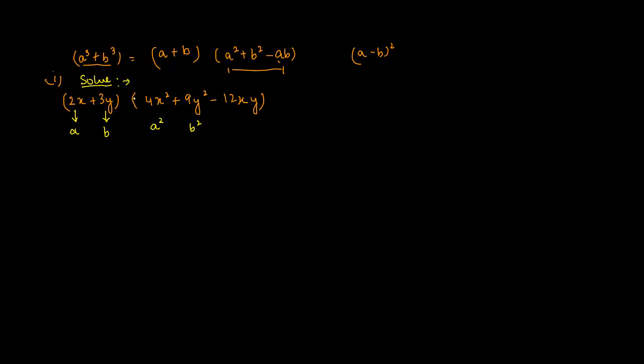So this is minus ab, which is nothing but actually this identity that we talked about. So if this is the case, then we know that this has to be equal to a³ + b³. My value of a is 2x and b is 3y.